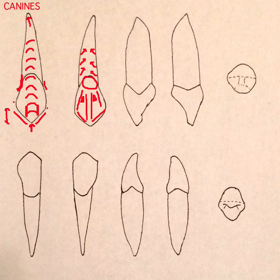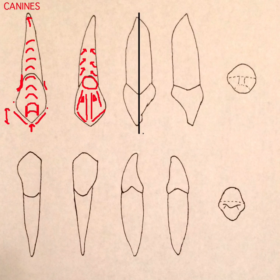Moving on to the mesial aspect, I'm going to draw a line bisecting this root. One of the most important features of the maxillary canine is that the cusp tip favors the facial direction — it is facial to a line bisecting the root from a proximal view.